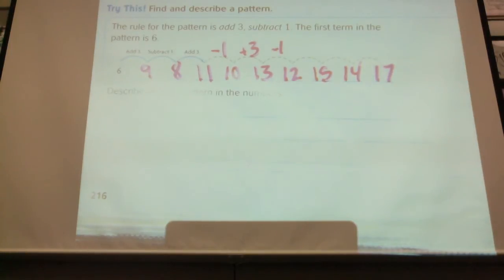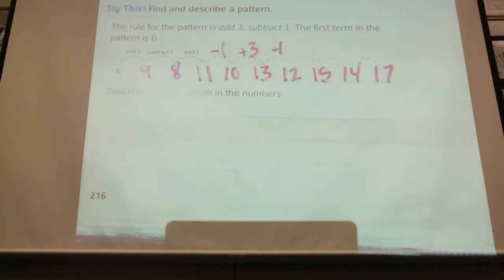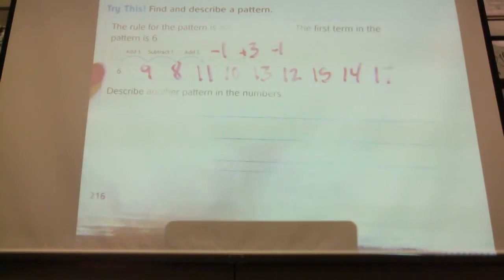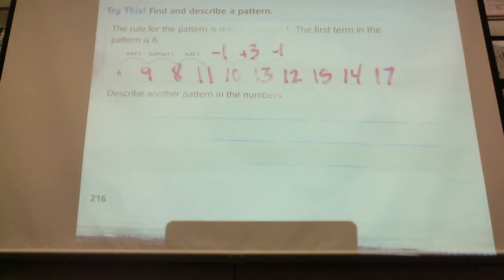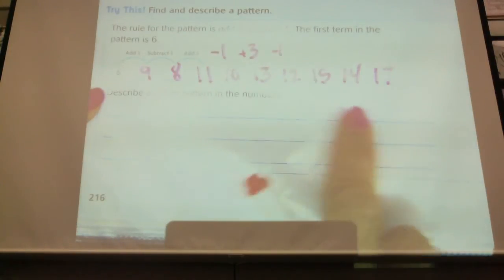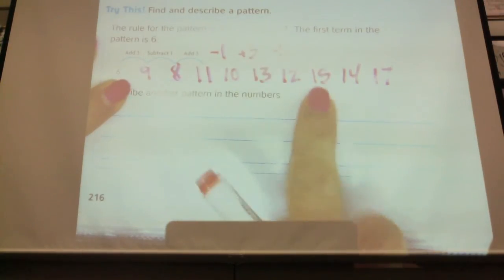Did somebody get something, anything besides those two patterns? Jaylen? The numbers get greater and then smaller. They get greater and then smaller. Okay, Ethan? Every other number adds two. Every other number is adding two. So you're starting here at six, eight, ten, twelve, fourteen. Do you notice I'm skip counting by twos? What? So I'm skip counting by twos every other number. And then I'm, and then the second one, I'm skip counting by twos, odd numbers. Nine, eleven, thirteen, fifteen, seventeen.